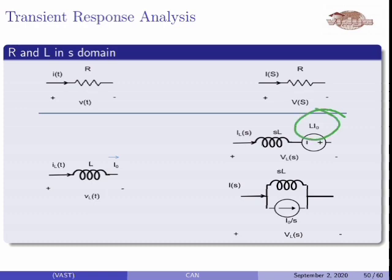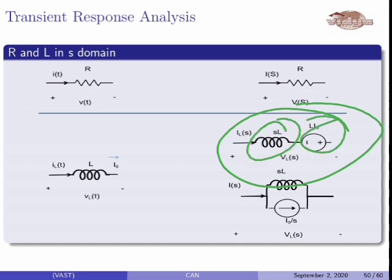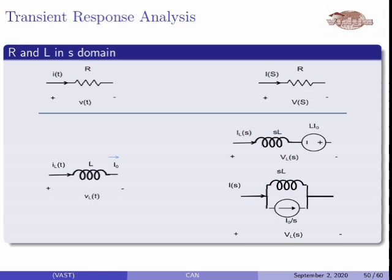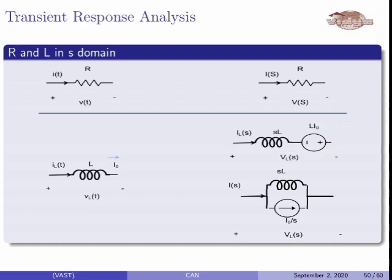We are going to represent the inductor equation here. Voltage across the inductor is equal to L times di/dt. That equation will be applied in the S-domain. If we are using the transformed circuit and applying KVL, the voltage is VL(S). Using VL(S), the form will remain set in the S-domain.